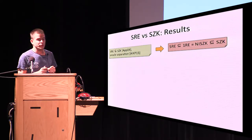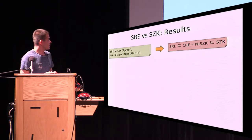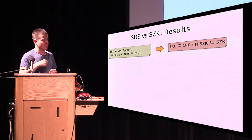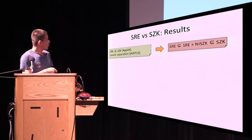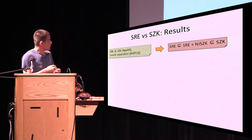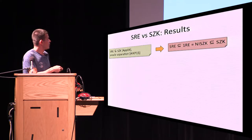We introduced a new notion called 1RE, which is a relaxation of statistical randomized coding where you require privacy only for a subset of inputs. We showed that this class is essentially equal to the languages that have a non-interactive statistical zero-knowledge proof system. Basically the interaction is substituted with a dealer who provides common randomness. Given that 1RE equals NISC, if you want to compare SRE and SZK, your task is reduced to comparing SRE with 1RE and NISC with SZK.